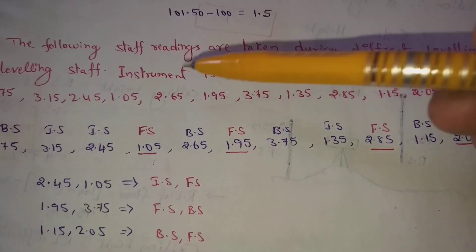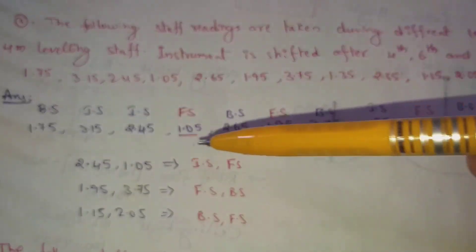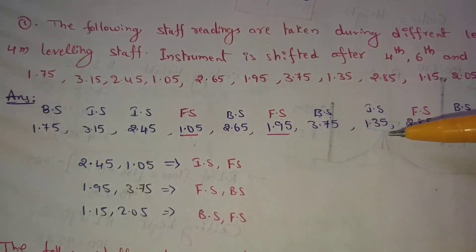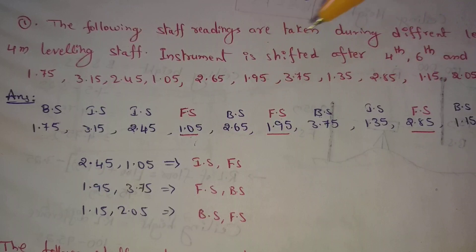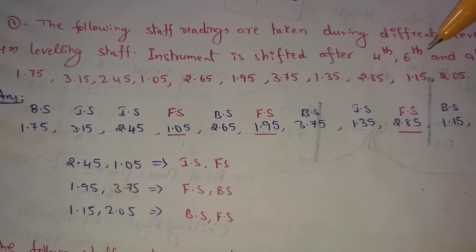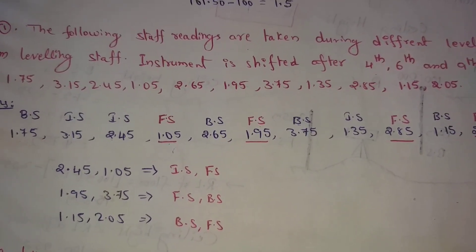So how do we use these values? Here we use the 4th, 6th, and 9th station points.